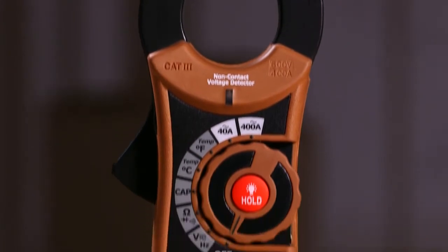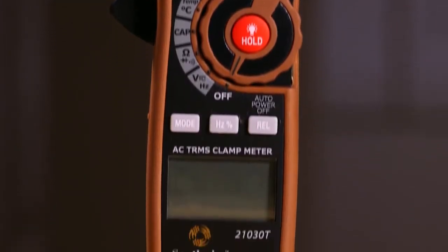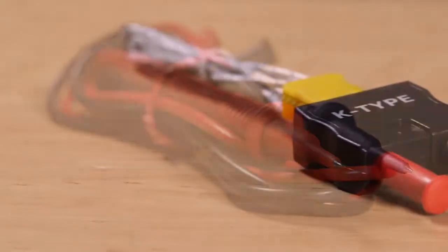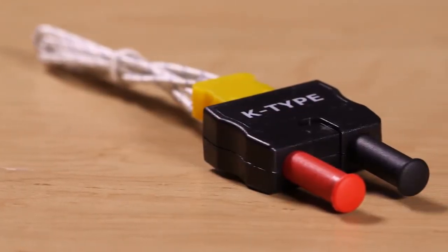The 21030T features a rugged, double-molded housing and comes complete with test leads, temperature probe, batteries, and storage case.